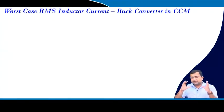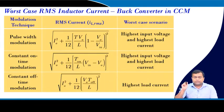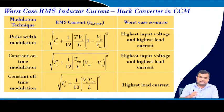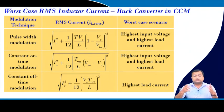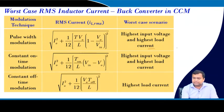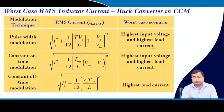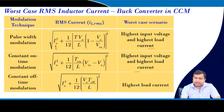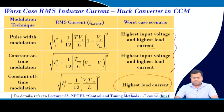The worst-case inductor current RMS in a buck converter in CCM is: RMS² = I_load² + ΔiL²/12. Since load current enters the picture, the worst-case RMS is highest at the highest load current and the highest input voltage under PWM. Under constant on-time control it is insensitive to input voltage, as discussed in lecture 23.